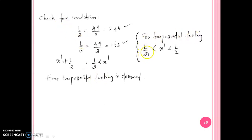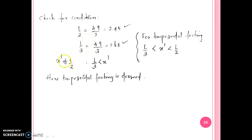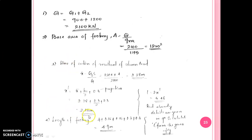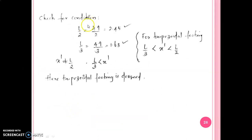We check three conditions to decide whether to adopt a trapezoidal footing. First condition: L by 2 is equal to 4.9 by 2, which gives 2.45. Since L equals 2 times x-dash, x-dash should equal L by 2. Here x-dash is 2.739, which is greater than L by 2 equal to 2.45. Therefore, x-dash does not equal L by 2, and we adopt a trapezoidal footing.